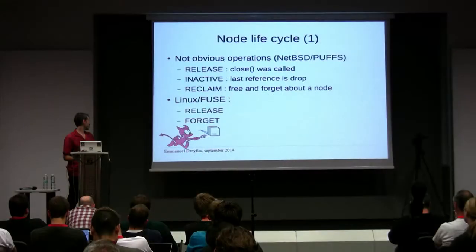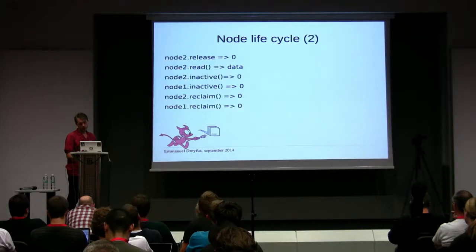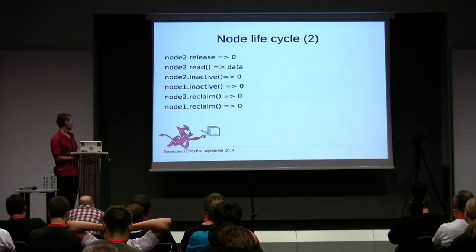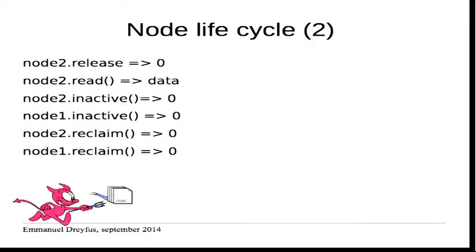Sometimes some VFS operations are not obvious. In NetBSD we have the release operation, called at close time; the inactive operation, called when the last reference on the file is dropped; and the reclaim operation, sent when the kernel will not use the vnode anymore and memory should be freed. Linux has only release and forget. It's tricky because after you get release invoked, you can still have read calls — you close the file but the kernel still has data to read. So we have to wait for inactive to actually close files.